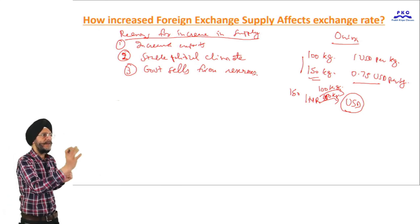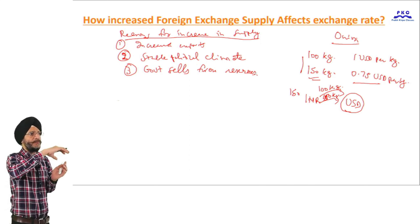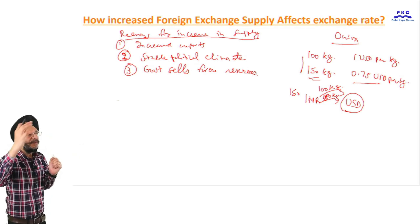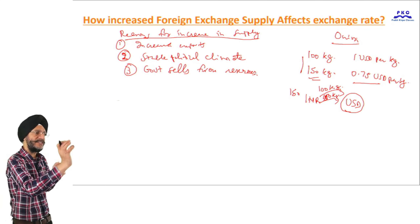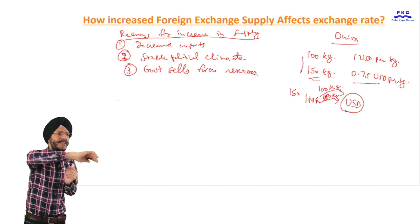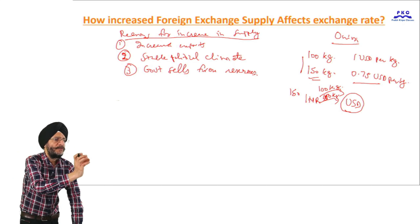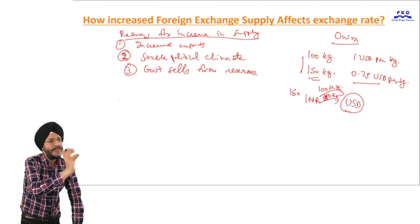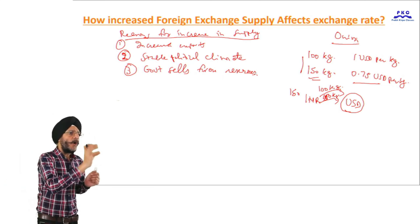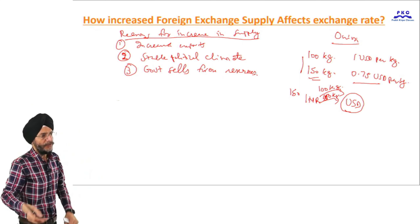These are certain reasons why foreign exchange supply increases. Now we will understand the impact of an increase in foreign exchange supply. If the supply of foreign exchange increases, what effect does it have on the exchange rate? Exchange rate means the value of a currency in relation to another currency — that is, how much foreign currency we can buy with one unit of domestic currency.